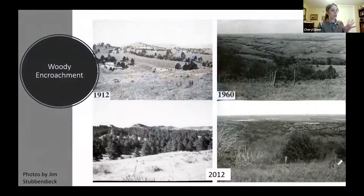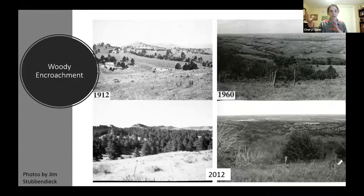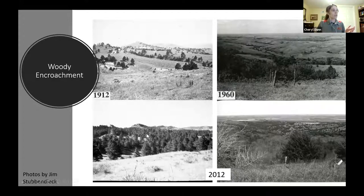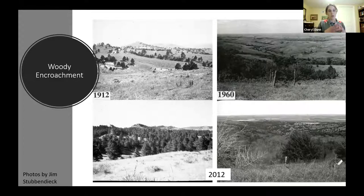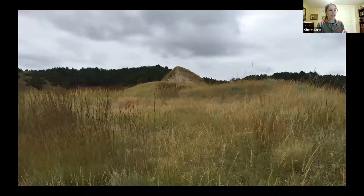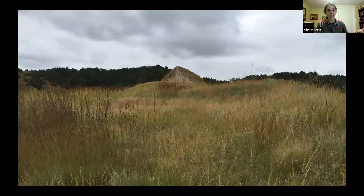Regarding woody encroachment: settlers came and planted trees, including eastern red cedar windbreaks. A 100-year comparison shows how dramatically this area has been transformed by eastern red cedar encroachment. Putting fire back on the land or mechanically removing woody vegetation is what will save our grasslands — and it can be done. This rehab site shows where eastern red cedar was removed and beautiful grassland has returned, though eastern red cedar remains visible in the background.